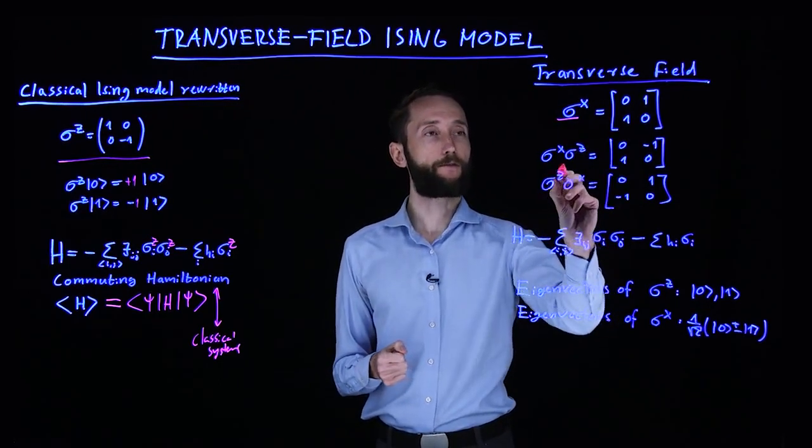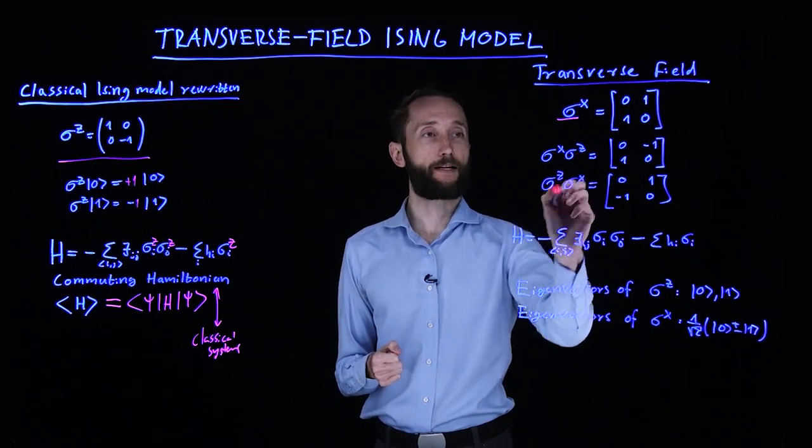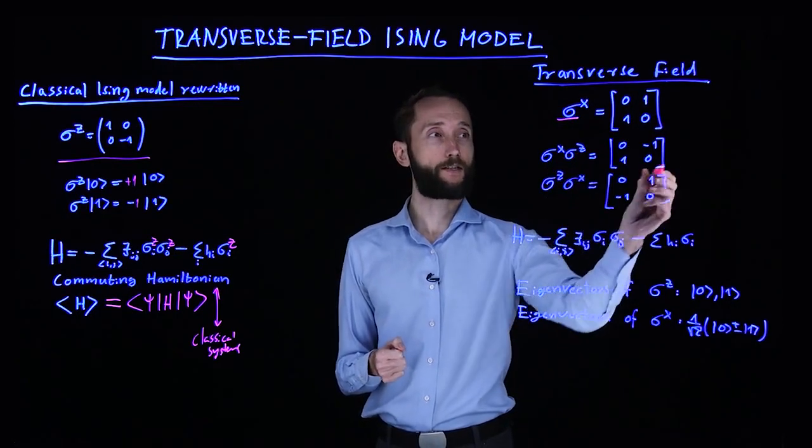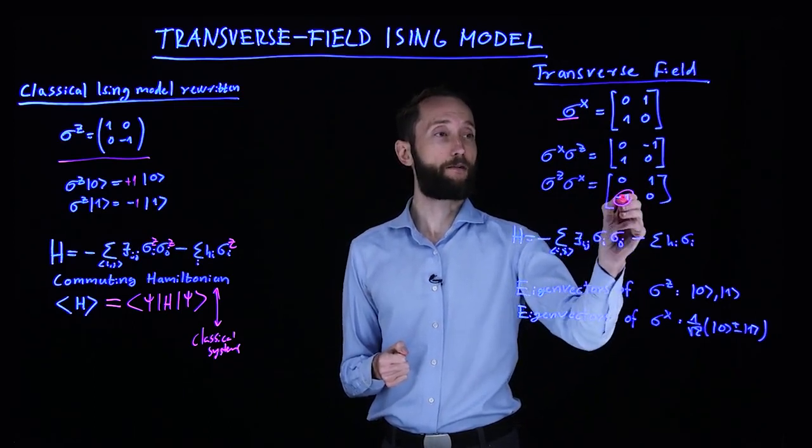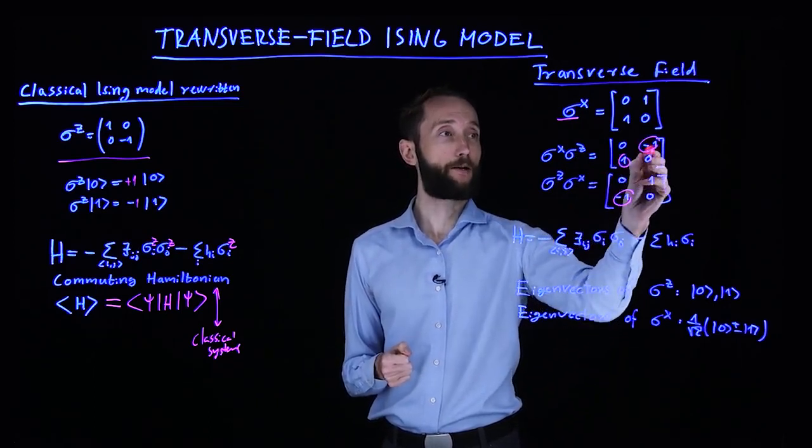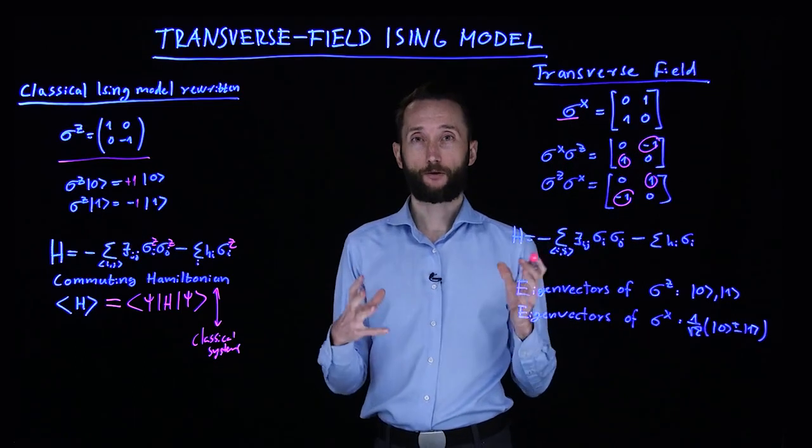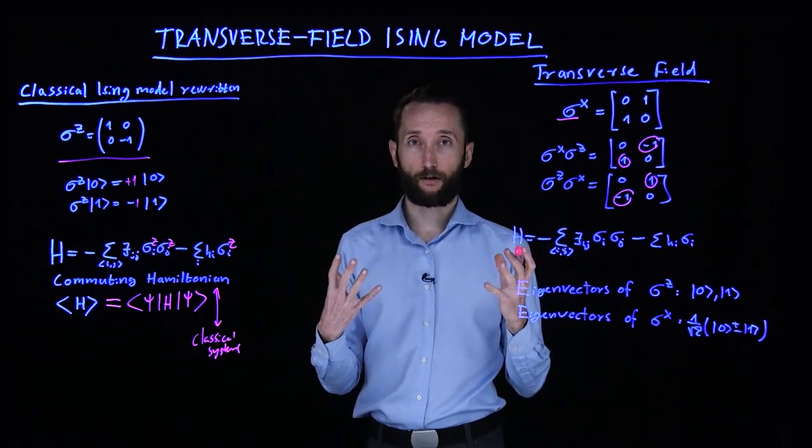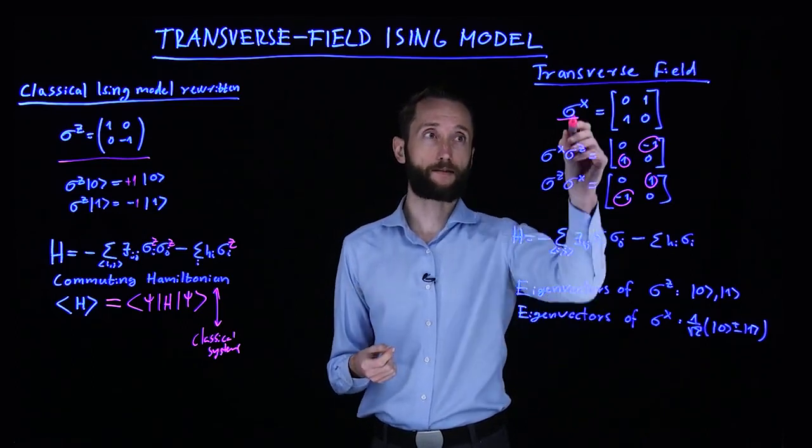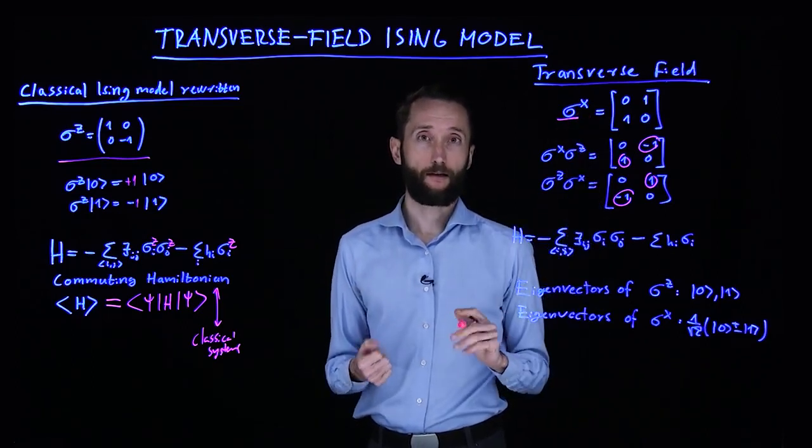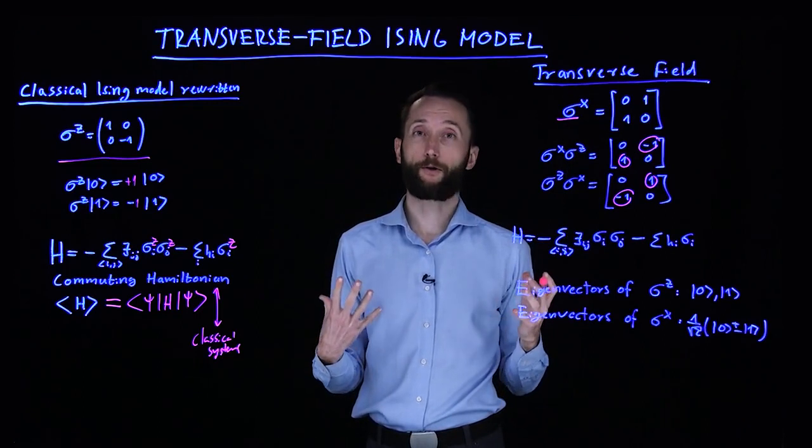It's defined as this, and if you multiply sigma x by sigma z or the other way around, you see that the result does not correspond, because here you have minus one, here you have plus one, and here you have minus one, and here you have plus one. So it matters in which order you use these two operators. In other words, if you add the sigma x to the Hamiltonian, then your Hamiltonian will no longer commute.